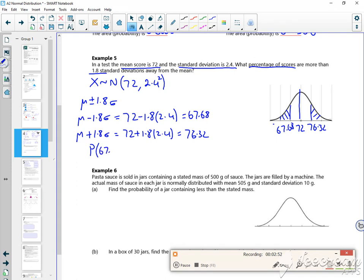So 67.68 less than X less than 76.32. So if you stick that in your calculator, that gives you 0.9281. Now what I want is the bit outside it, so what I want is 1 minus 0.9281, which is 0.0719.